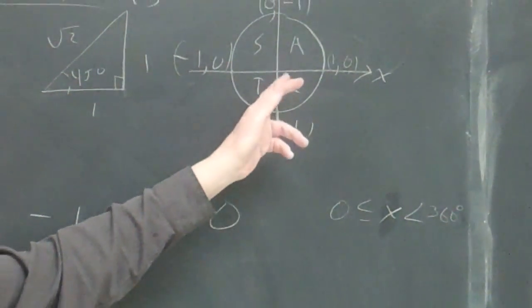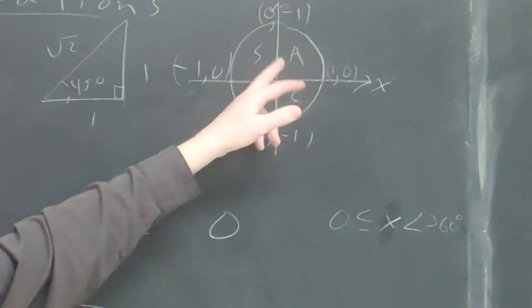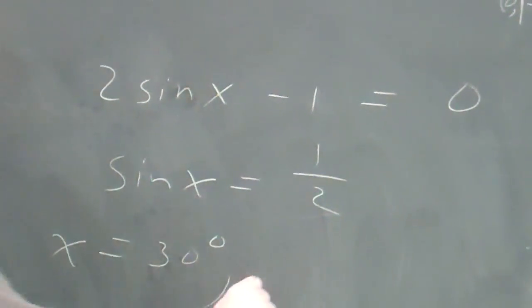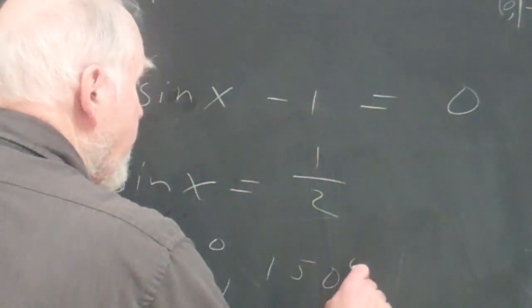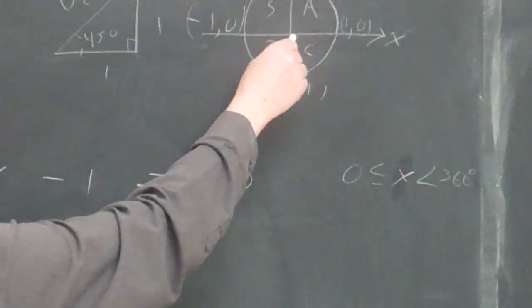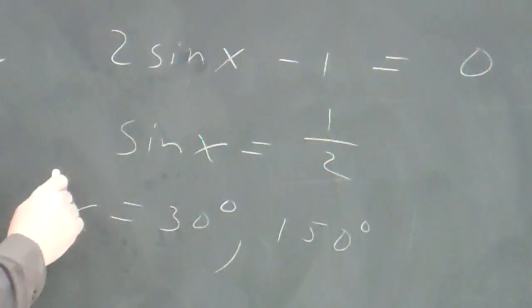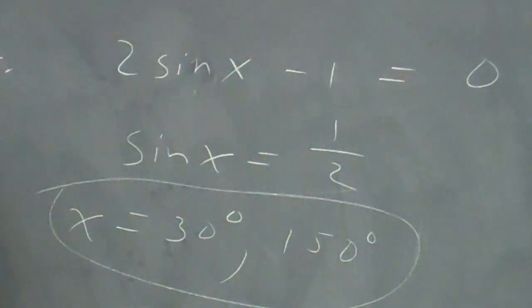Only the sine is positive here. Only the tangent is positive here. And only the cosine is positive here. And the second quadrant, 30-degree angle with a 30-degree reference angle, which is 150 degrees, right? With a 30-degree reference angle, it's going to be 150 degrees. So these are the two values from zero to 360.